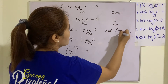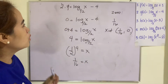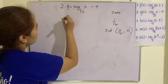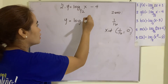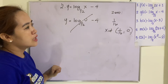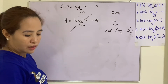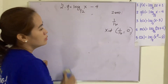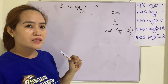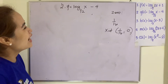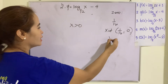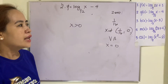The x-intercept is (1/16, 0). For the y-intercept, replace x by 0: y equals log of 0 to the base 1/2 minus 4. This is indeterminate minus 4, so there is no y-intercept. For the asymptote, x must be greater than 0, so the vertical asymptote is x equals 0.